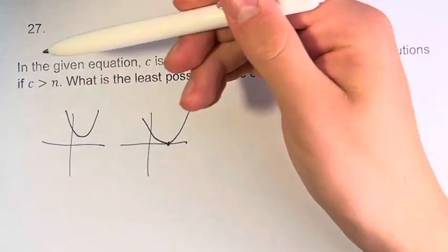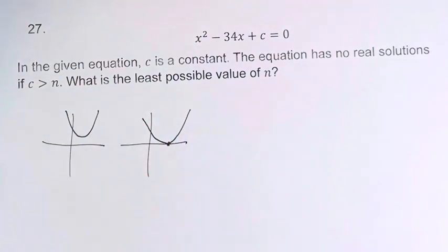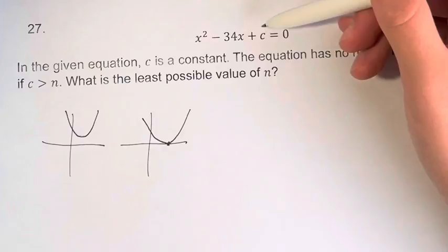Therefore, we need to find the value of c when we have one solution, and then all values greater than that, there's going to be no solutions. So how do we do that? We're going to complete the square.